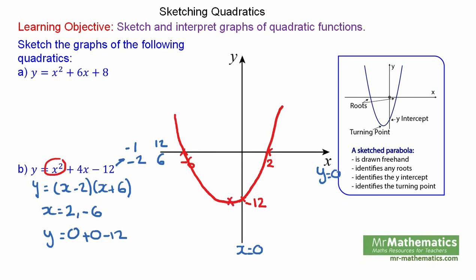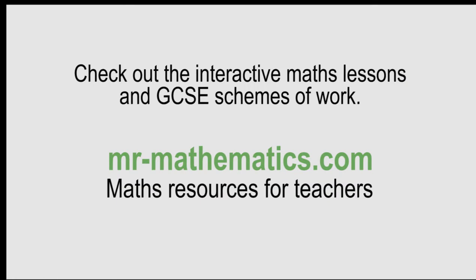And lastly, the turning point. We'll complete the square. So it will be x plus 2 all squared, and then we will need to take away 16 to get from positive 4 to negative 12. So the coordinates of the turning point will be minus 2 and minus 16.